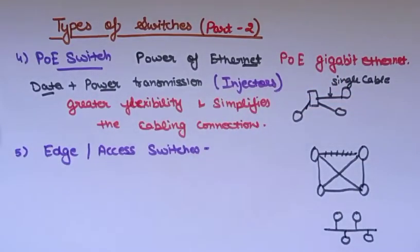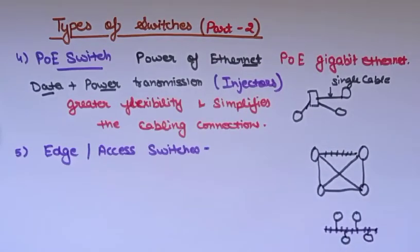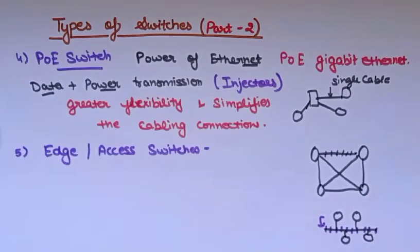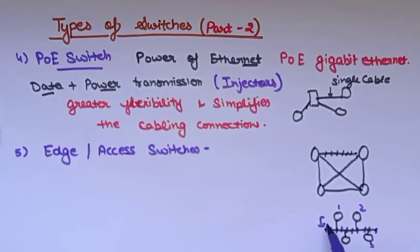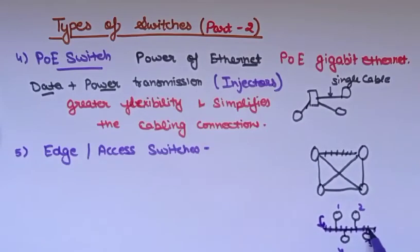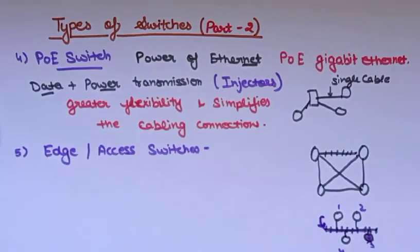In the injector model, on the central common cable of the network, we inject both power and data. The data intended for a specific system is injected onto the cable and travels through it to reach that target system. That is why these are called injector systems or injector switches.